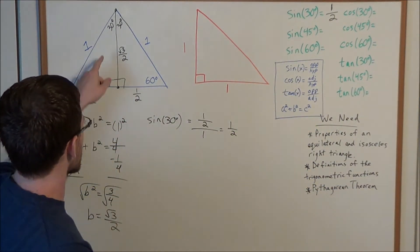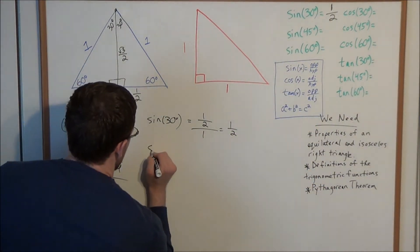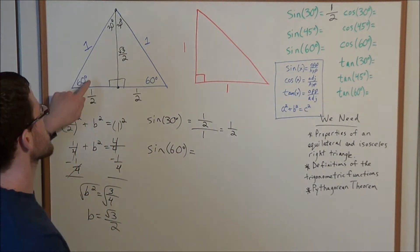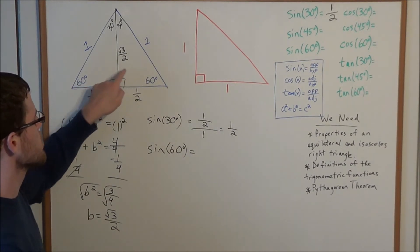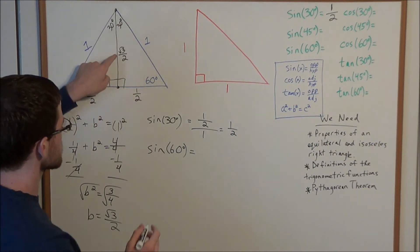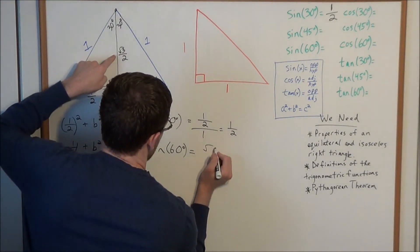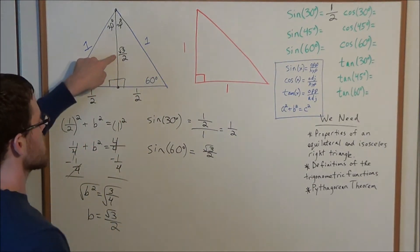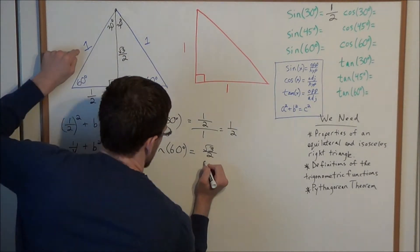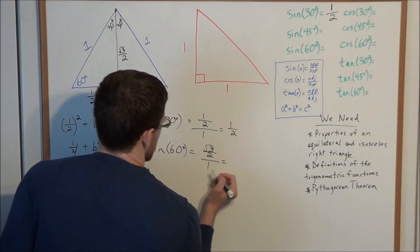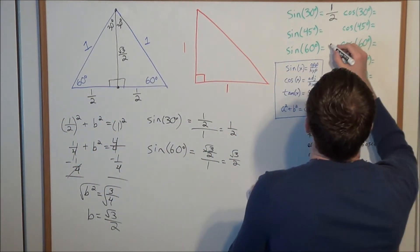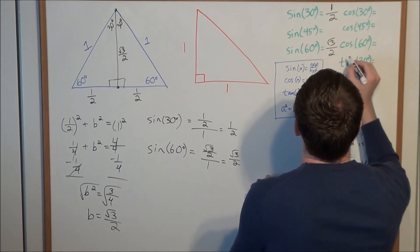Now we can do the same for sine of 60 degrees. Looking at the 60-degree angle — we can use either triangle — the opposite side is the square root of three over two, divided by the hypotenuse of one. So sine of 60 degrees equals the square root of three over two.